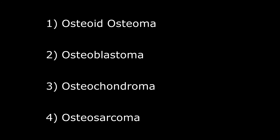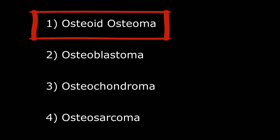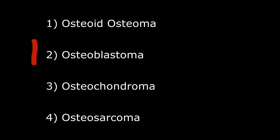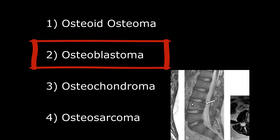Now on to some new tumors — the four O's: osteoid osteoma, osteoblastoma, osteochondroma, and osteosarcoma. Starting with osteoid osteoma, it is the most common of the four and usually resolves with medications; surgery is not really performed. Here you can see it on CT. Osteoblastoma is a larger form of osteoid osteoma and is more aggressive, so it can require surgery.